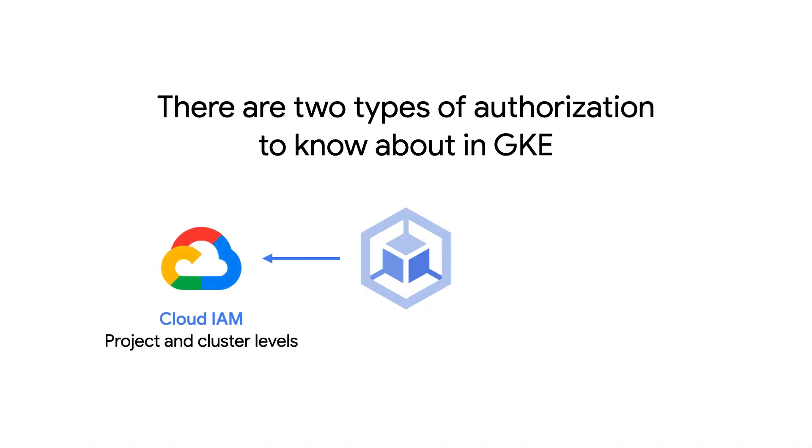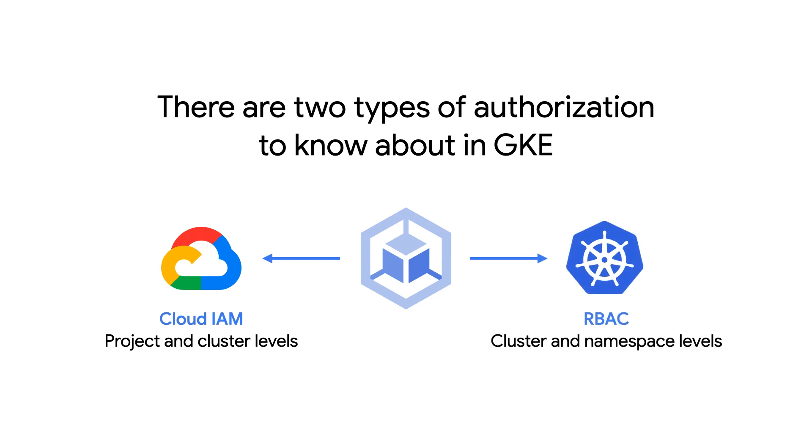When it comes to GKE, there are two distinct types or levels of authorization that you should be familiar with: Google Cloud IAM and Kubernetes Role-Based Access Control, or RBAC.